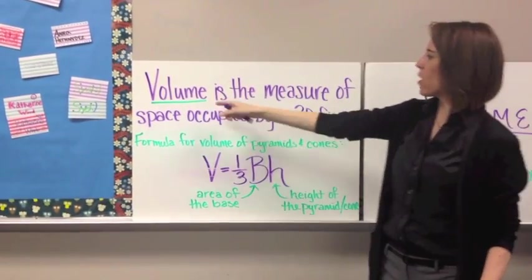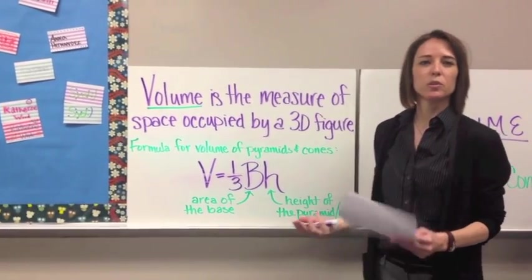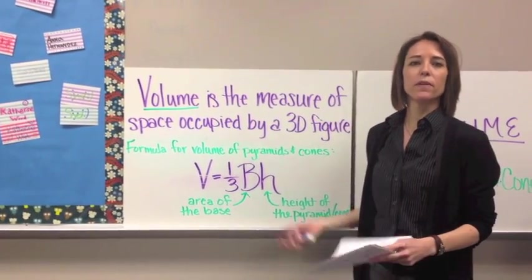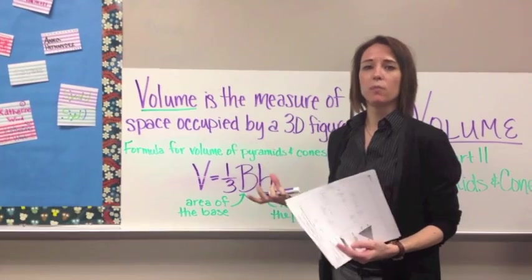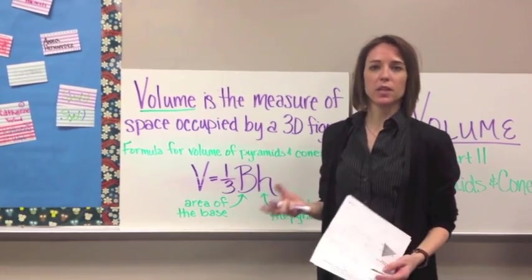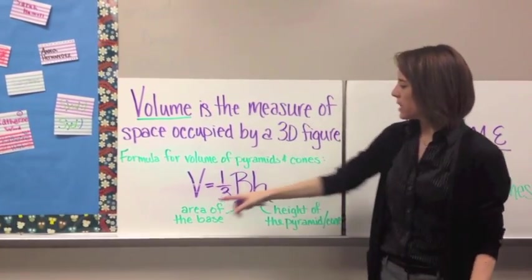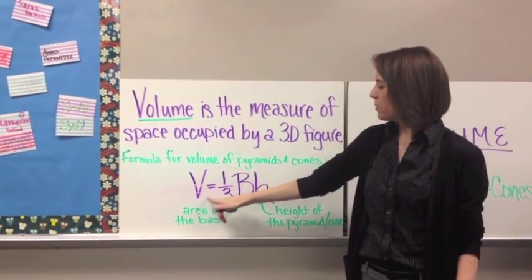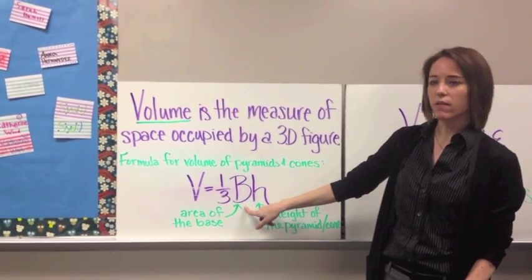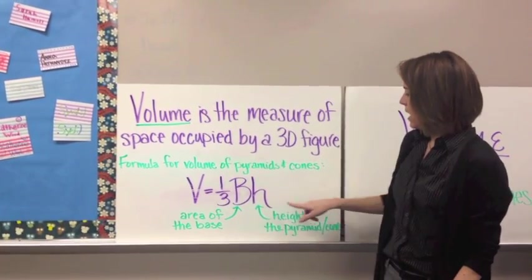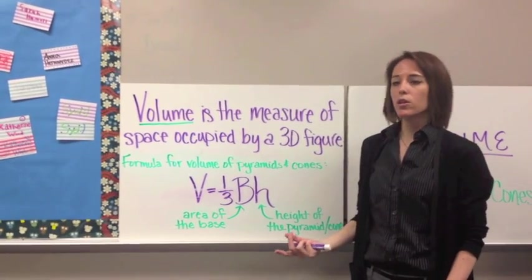Volume is the measure of space occupied by a 3D figure. You always want to think about filling a swimming pool or filling up an object with liquid — that tells you what the volume is. The formula for volume of pyramids and cones is: V = (1/3) × B × H, where the big B is the area of the base and H is the height of the pyramid or cone.